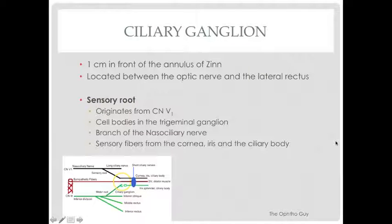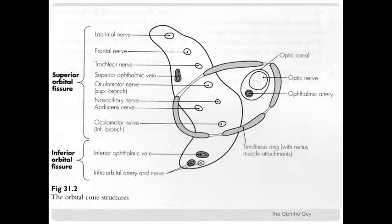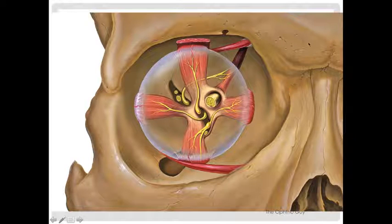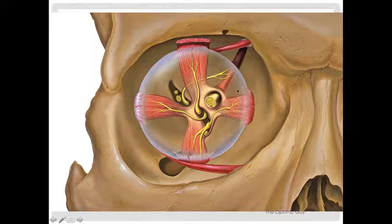I'll have all of this for you in text format. The ciliary ganglion is actually located 1 cm in front of the annulus of Zinn. The annulus of Zinn is just this fibrous ring right here, and it covers the optic nerve as it comes into the orbit. It is also the attachment point for five of the extraocular muscles — I have another figure which will show you all five of the extraocular muscles that originate from the annulus of Zinn.